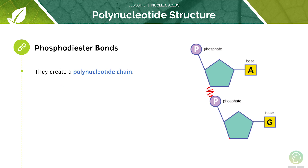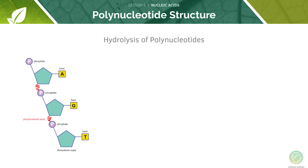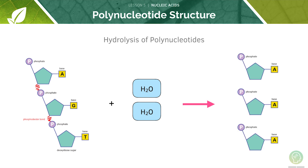These bonds create a polynucleotide chain. There's a sugar-phosphate backbone which comes from the pentose sugars and the phosphate groups. These bonds can be broken through hydrolysis reactions — we can add water, leading to the formation of separate nucleotides once more.